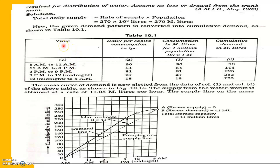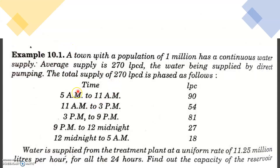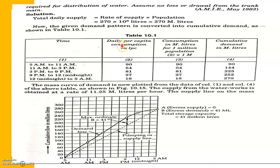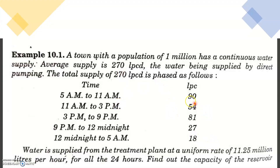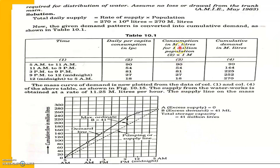The first column is the time period as given in the question. The second column is the daily per capita consumption in lpc, also given in the question. The third column is the consumption in million liters for 1 million population — since the population is 1 million, the values will be the same numerically but in units of million liters. The fourth column is the cumulative water demand with respect to time duration.